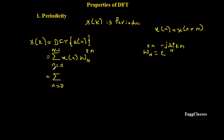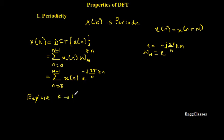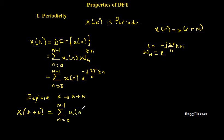Replacing the twiddle factor with its equivalent, we get: summation N equal to 0 to N minus 1, X of N, e to the power minus J 2 pi divided by capital N, into K into small N. To prove X of K as periodic, I replace every K with K plus capital N. So X of K plus capital N equals summation N equal to 0 to N minus 1, X of N, e to the power minus J 2 pi divided by capital N, into (K plus capital N) times small N.